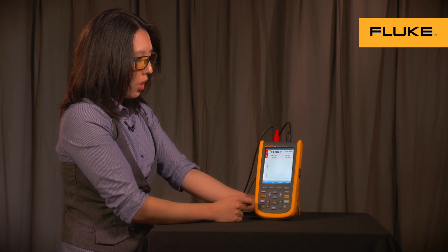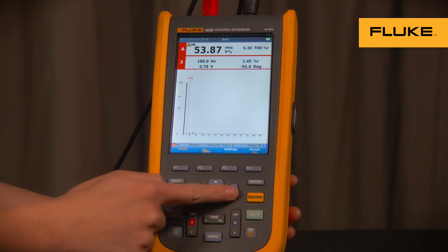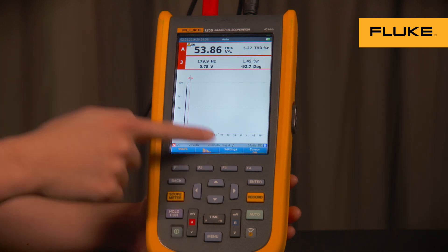If you turn the cursor on, you can now select which power harmonic you want to look at. So right now, we're currently on the third harmonic.